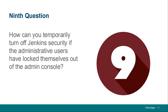Question number nine: how can you temporarily turn off Jenkins security if there is a problem with administrators locking themselves out? Just go in and find the config.xml file under your Jenkins home directory, open that up with Notepad, and you'll find a setting called 'use security'. If you set that to false, security gets turned off and you can log in in an unauthenticated manner. Of course, don't do that too often, and if you do use that trick, make sure you turn security back on after you've fixed your security problems.